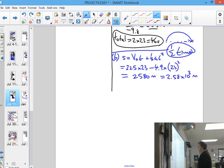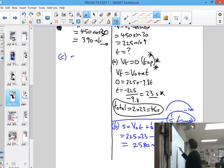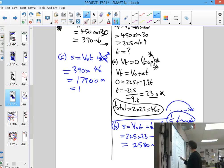So part C was to get the range, the range here, which will appear in this column, using the horizontal part. The acceleration is zero. So the range is going to be 390 metres per second, times by the full time. The full time here is 46 seconds. 17,900 metres. So you could write that as 1.79 by 10^4 metres.